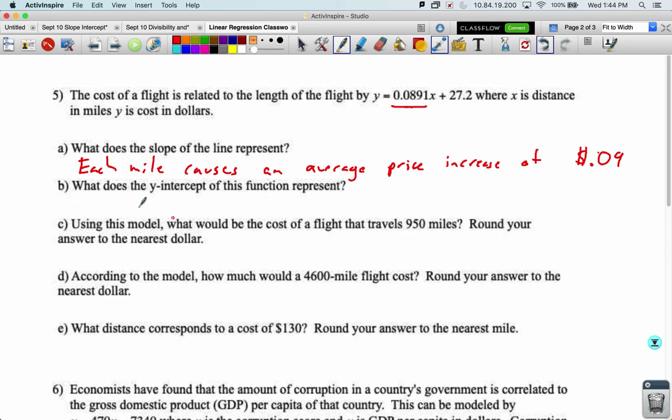What does the y-intercept of this function represent? So that 27.2, we can kind of assign a meaning to that. That's the flat rate. So even if we go zero miles, we're still paying $27. You could think of that as just like the cost to sit down. Flat rate, the cost of a flight that goes zero miles. So it's sort of like the pricing structure says start at $27 and then charge an additional nine cents per mile.